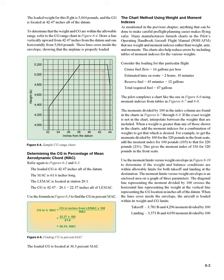The moments divided by 100 in the index column are found in the charts in Figures 6-7 through 6-9. If the exact weight is not in the chart, interpolate between the weights that are included. When a weight is greater than any shown in the charts, add the moment indexes for a combination of weights. For example, to get the moment index for 320 pounds in the front seats, add the index for 100 pounds (105) to that for 220 pounds (231), giving a moment index of 336.